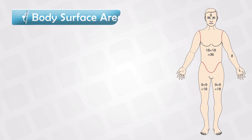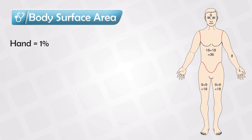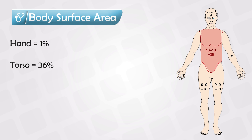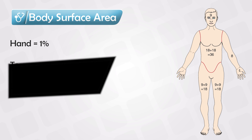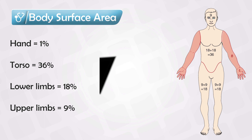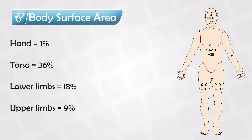To calculate the body surface area, remember that the palm of the hand equals one percent. The torso is 18 percent anteriorly and 18 percent posteriorly. Each lower limb is 18 percent — nine anteriorly and nine posteriorly. Each arm is nine percent — four and a half anteriorly and four and a half posteriorly.